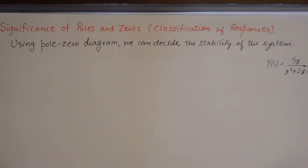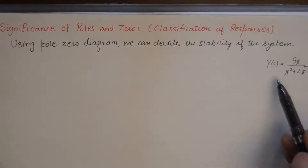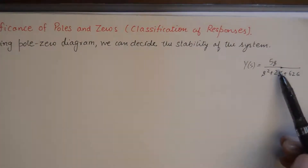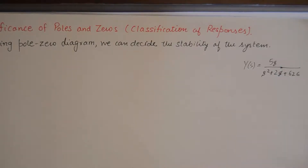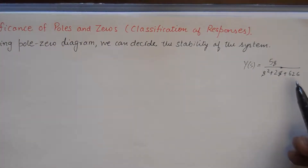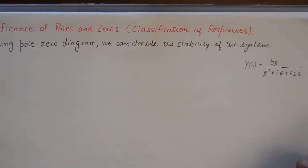In network functions, a response is a term associated with the output of a system. A typical network function is an admittance function with some polynomial in the numerator and some polynomial in the denominator. The roots of the numerator are known as zeros and the roots of the denominator are poles.